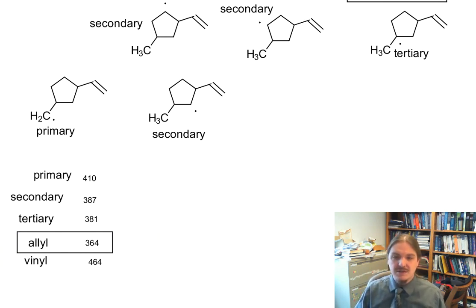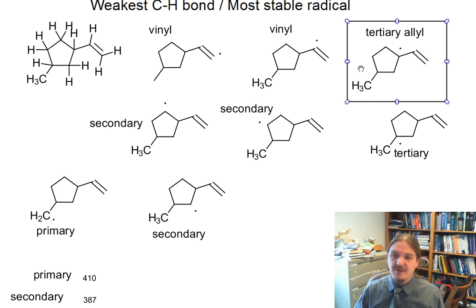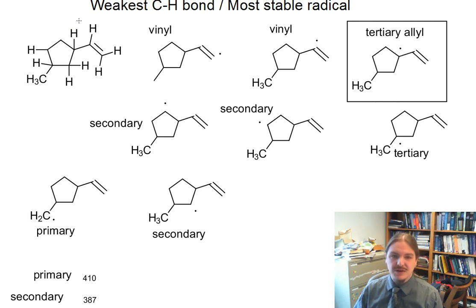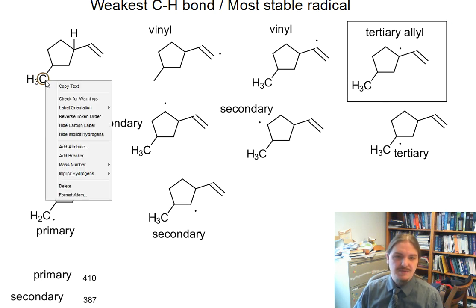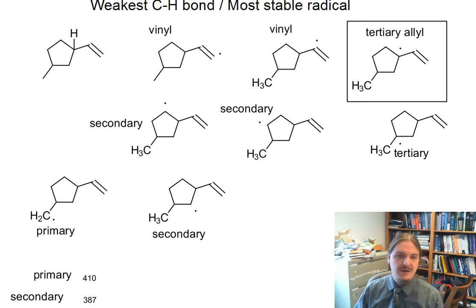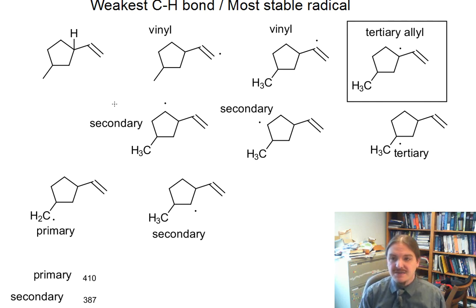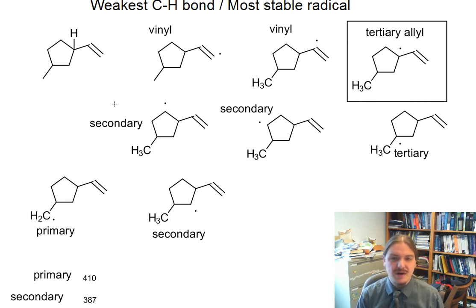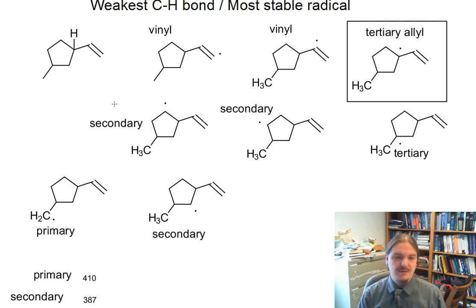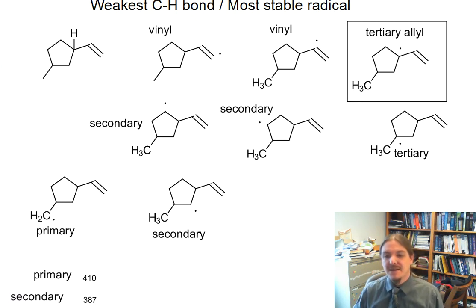If we can identify an allyl position, that position is going to have the weakest carbon-hydrogen bond. I'm going to go back to the original structure and delete all of the other hydrogens except for the weakest carbon-hydrogen bond at that allyl position. In the next video on the stability of radicals, I'll give a couple of examples of radicals that are so stabilized that they are considered stable or persistent radicals, which means they can be isolated and stored for long periods of time. Thank you for watching.